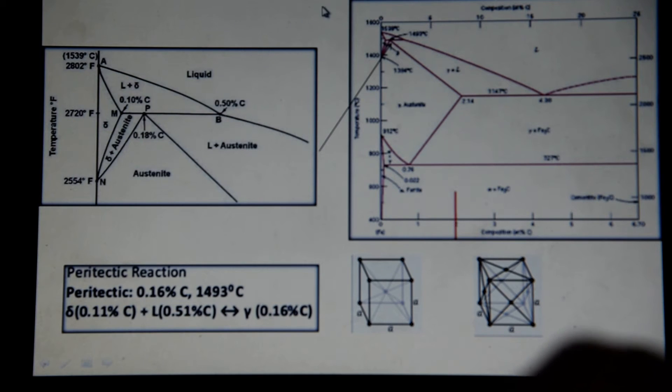If you look at the iron-iron carbide phase diagram, or in steel, at the top left corner, that's where the peritectic transformation happens. This is an enlarged view on the left.